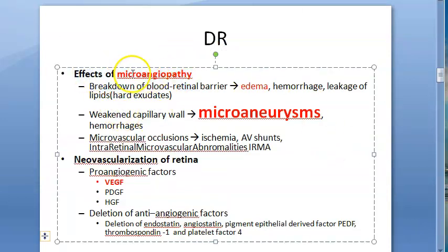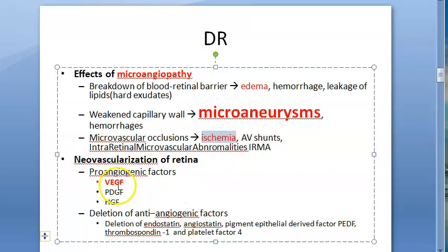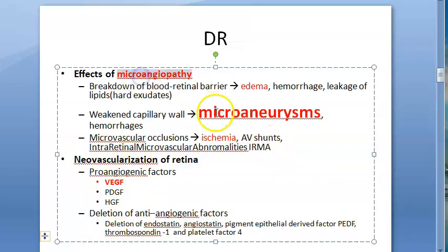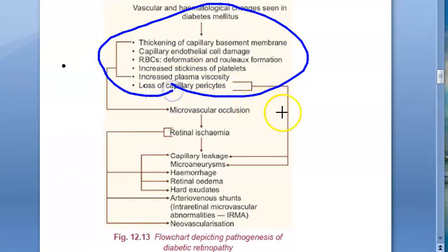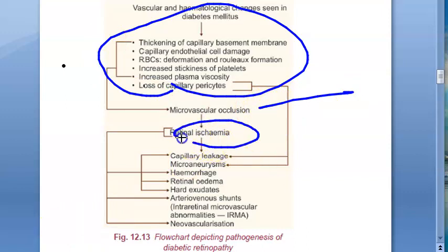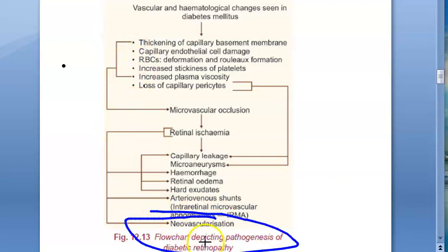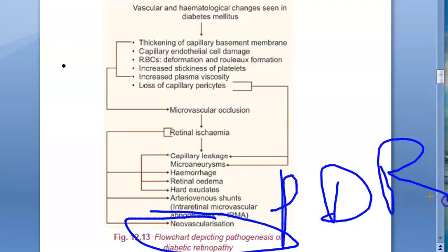Because of microangiopathy, there will be microaneurysms and edema. Very importantly, there will be ischemia, which can lead to neovascularization. Factors driving neovascularization include VEGF (vascular endothelial growth factor), PDGF, and HGF. Microvascular occlusion leads to ischemia, which leads to neovascularization — so after long-standing diabetes, neovascularization ultimately occurs. This is what we are looking at in PDR.